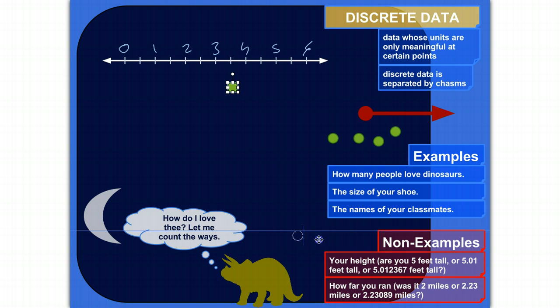Some non-examples would be something like your height. If you're measuring height, you could be 5 feet tall or 4 feet tall. But you could also be 5.01 feet tall or 5.012367 feet tall. All those things make sense for height. You don't have to be exactly 5 feet or exactly 4 feet.